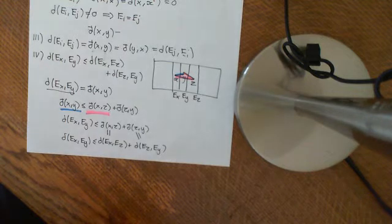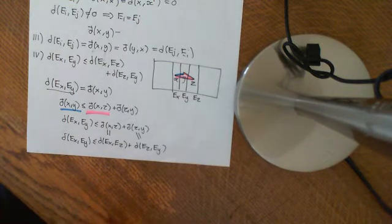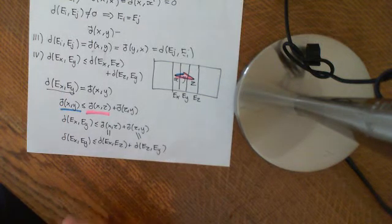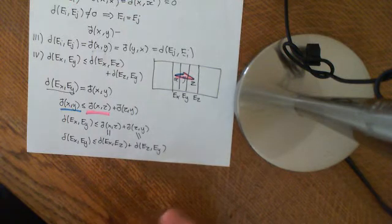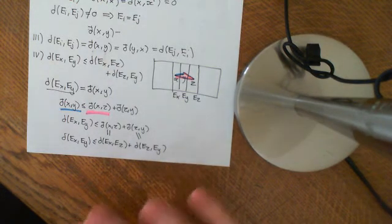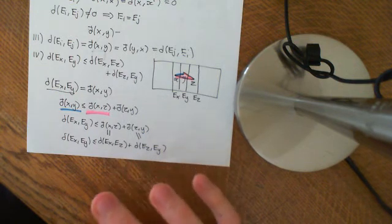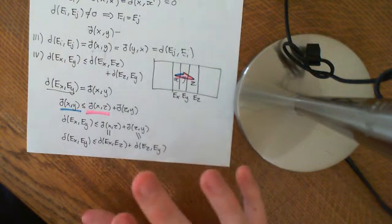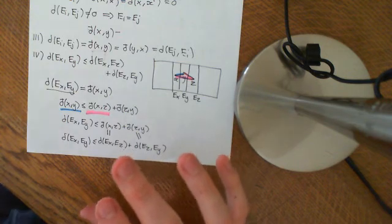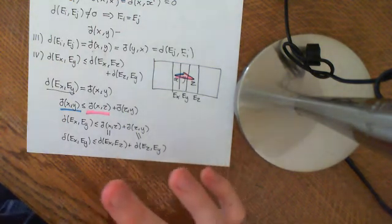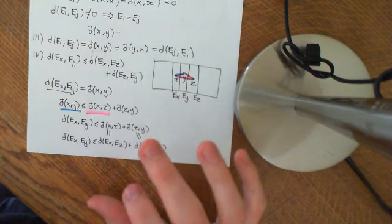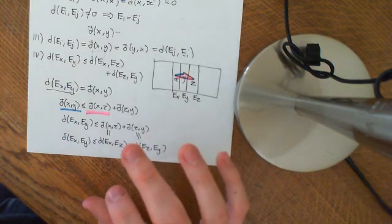So what we've seen is how from a pseudometric space you can construct a set on which you can define a metric, which is very closely related to the original pseudometric structure on our original set. This is very similar to the concept of creating factor groups from larger groups, or creating fields from rings — you see this done a lot in abstract mathematics.